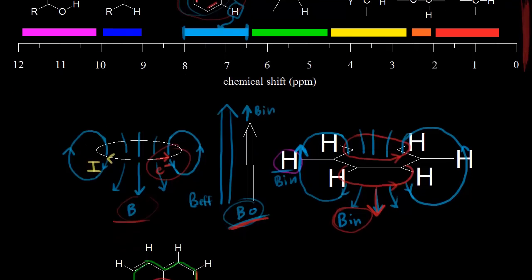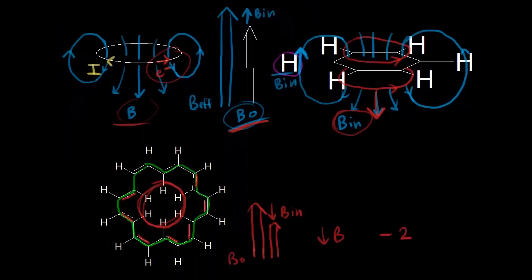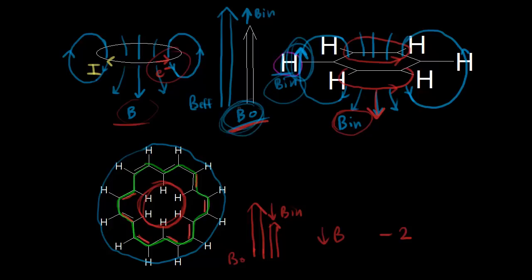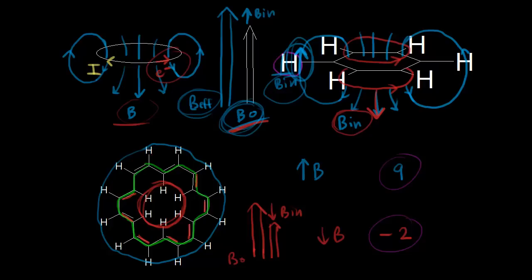So that's a pretty dramatic effect. The twelve protons outside of the ring are in a region where the induced magnetic field is in the same direction as the applied magnetic field. Therefore, they feel a larger effective magnetic field — a greater energy difference between alpha and beta spin states — giving a higher frequency signal and a higher chemical shift of about nine parts per million. The dramatic difference between the inner (-2 ppm) and outer (~9 ppm) proton chemical shifts shows how powerful this effect can be.